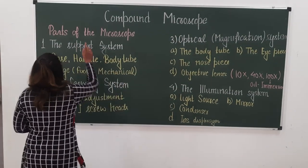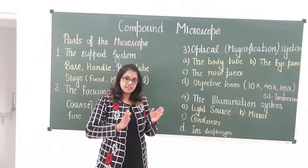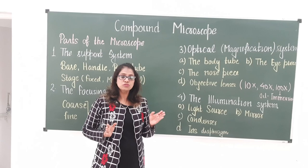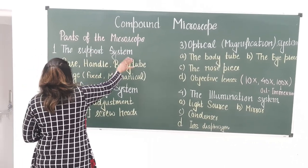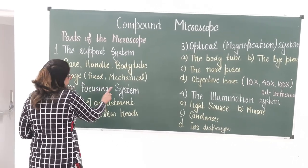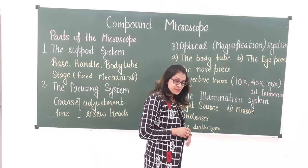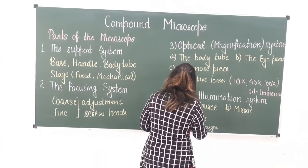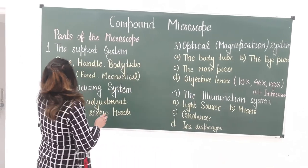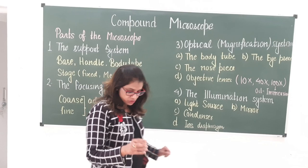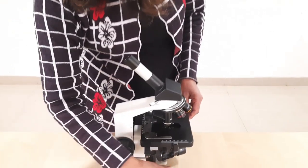For ease of learning, we can categorize different parts of the microscope: the first part is the support system, second is the focusing system, third is the optical or magnification system, and fourth is the illumination system. Let us now look at the support system.